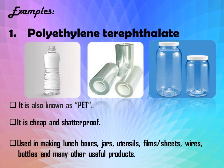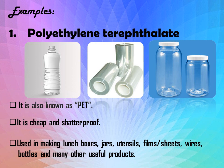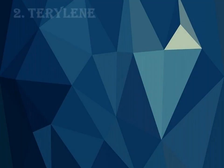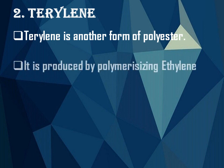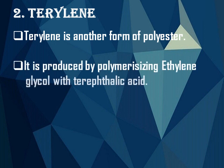Let us see some examples of polyester. The first example is Polyethylene Terephthalate, also known as PET. It is cheap and shatterproof. PET is used in making lunch boxes, jars, utensils, films, wires, bottles, and many other useful products.